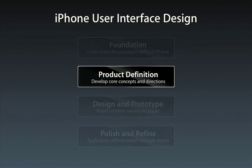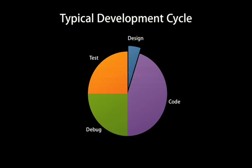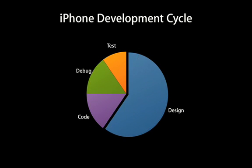Now let's talk about product definition. For most platforms, the development cycle is comprised of maybe 5% or 6% being design, and usually that time is spent up front. Whereas with the iPhone, we recommend at least half of your time be devoted to design.